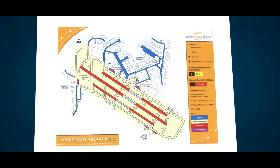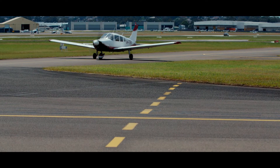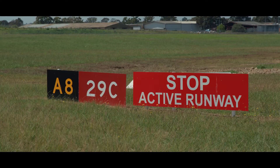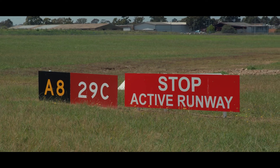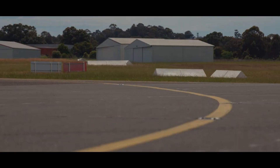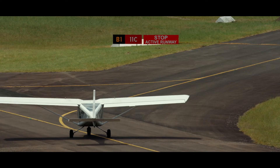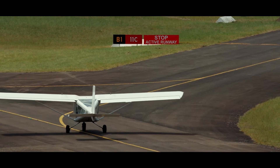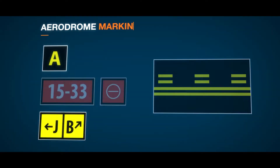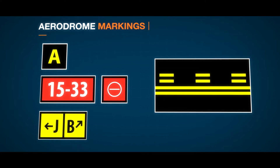Keep the chart available. As you taxi, aerodrome markings, information signs and lights are installed to assist you to follow correct taxi routes. Ensure you are familiar with these and their meaning. If in doubt, refer to the Aeronautical Information Publication for further information.